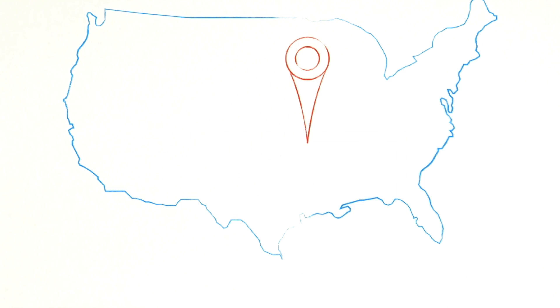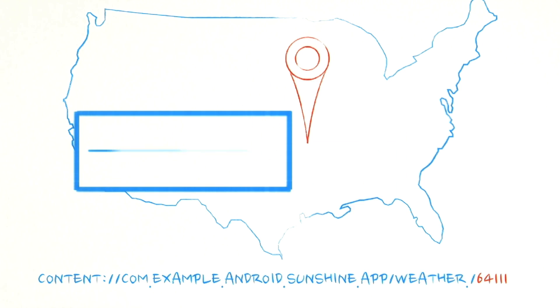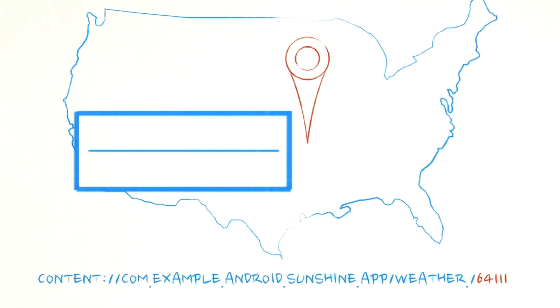There's one other great thing we get from using URI with a data location. It's easy to have our database notify components that are registered to observe that location, which causes our cursor to update our list and show the latest data.